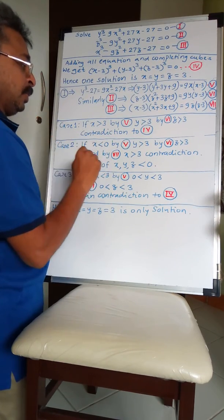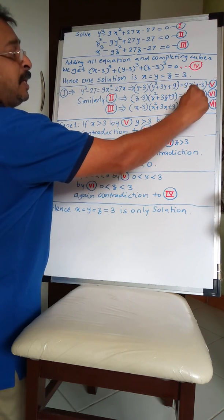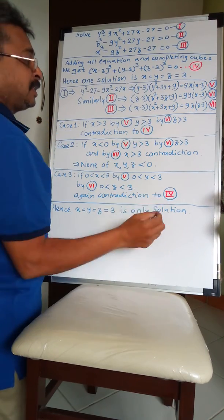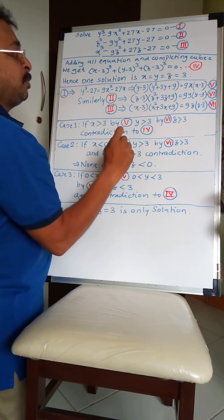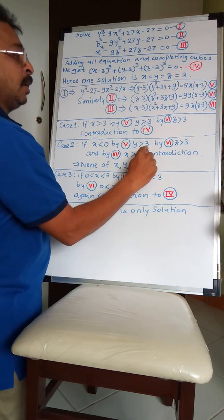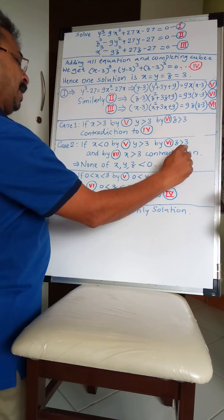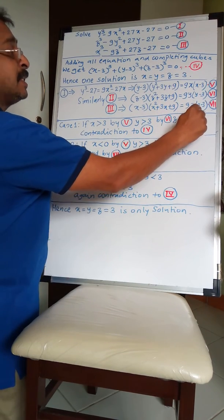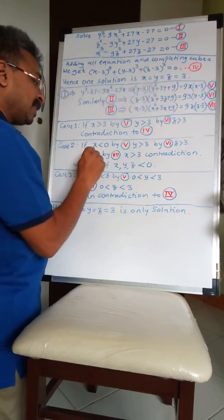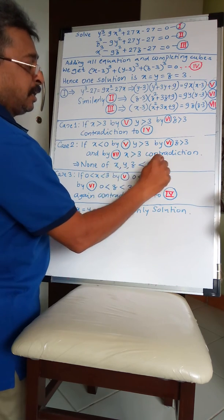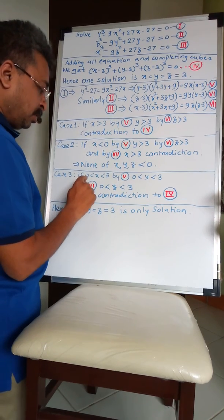Case 2: if x < 0, then by equation 5, (x - 3) < 0 and x < 0, so RHS is still positive. If RHS is positive then (y - 3) must be positive, hence y > 3. If y > 3 then z > 3, and by equation 7, z > 3 implies x > 3 — but we assumed x < 0. Contradiction, so none of x, y, z can be less than 0.